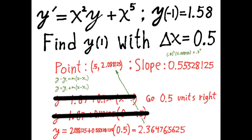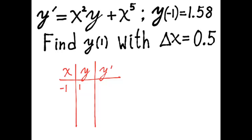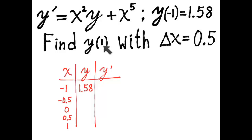Now to make that seem a little simpler, let's write it out in tabular form. I'm going to make a table with three columns: x, y, and y prime. I can fill in two entries immediately because of the initial condition — y of negative 1 equals 1.58, so x equals negative 1, y equals 1.58. I can also immediately fill in all the x values because delta x equals 0.5 and we want to go to x equals 1. To fill in y prime, I just take the x and y values on the same row and put them into the formula.